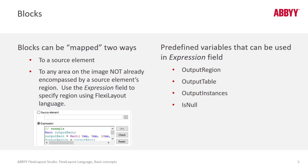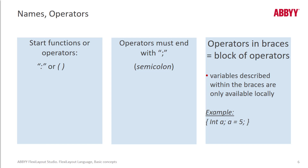OutputInstances works only for repeating groups. OutputTable works only for tables, for the table block. OutputRegion describes the area that gets transferred to FlexiCapture. Here we can see — it's truncated a bit — the definition of a rectangle, and it's assigned to OutputRegion. Let's go to the next slide and talk about names and operators.